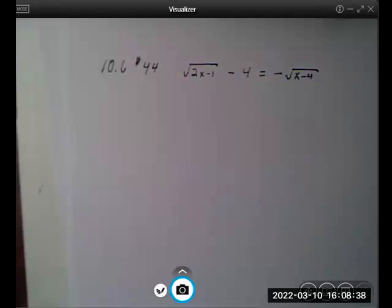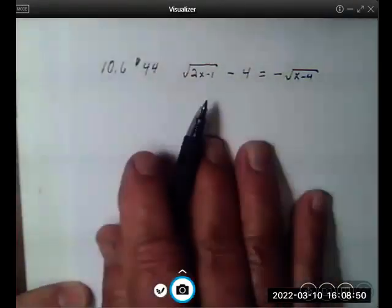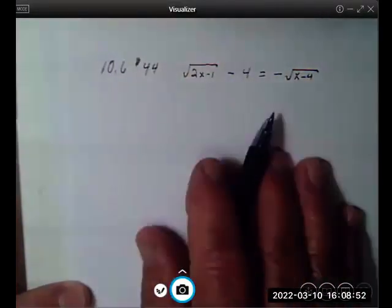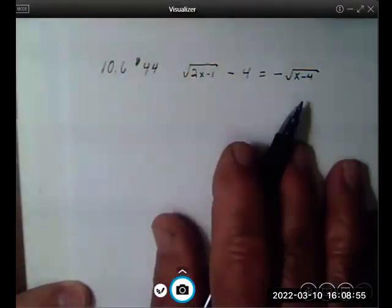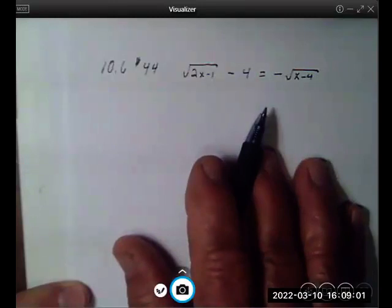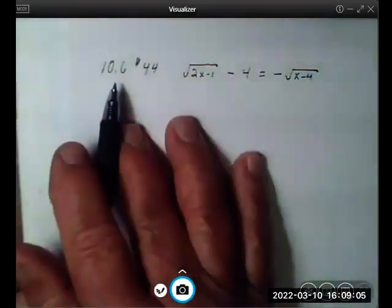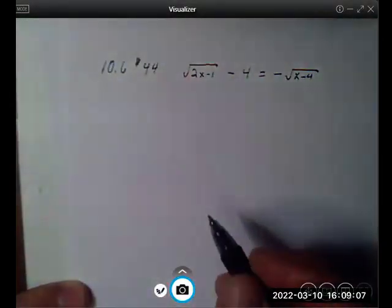To go over a radical equation showing the work and a couple of the concepts that we've learned. When we look at this, our first rule is to make sure if we have two radicals that they're on the opposite side so that we don't have a middle term that has a quadratic radical. So these are already set up. This is problem number 44 in 10.6, which is a homework problem.